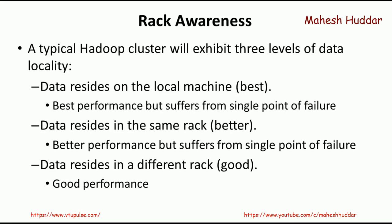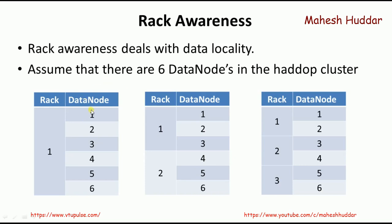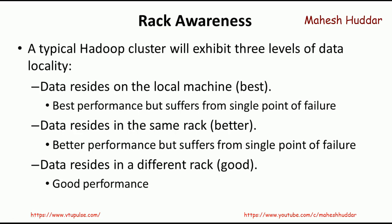The second case is the data resides on the same rack — data is divided into blocks and put into the same rack across different Data Nodes. If one data node is not working, you can access at least part of the data from another node on the same rack. There will be better performance, but it still suffers from a single point of failure: if the rack's switch fails, all data nodes on that rack become inaccessible.